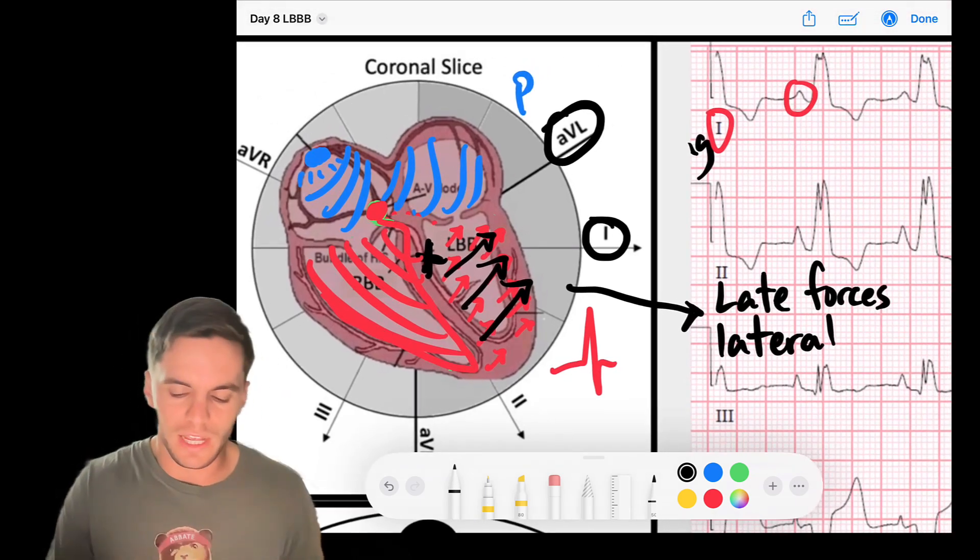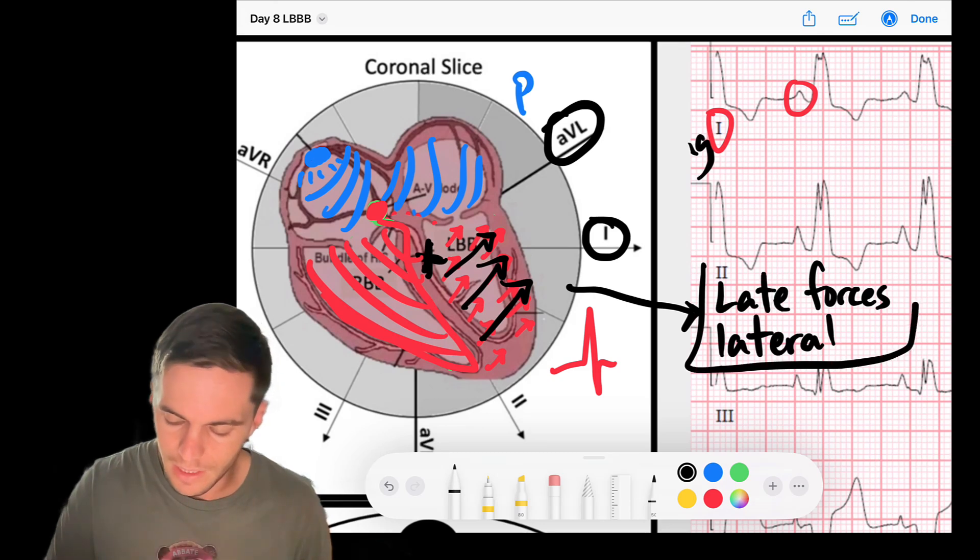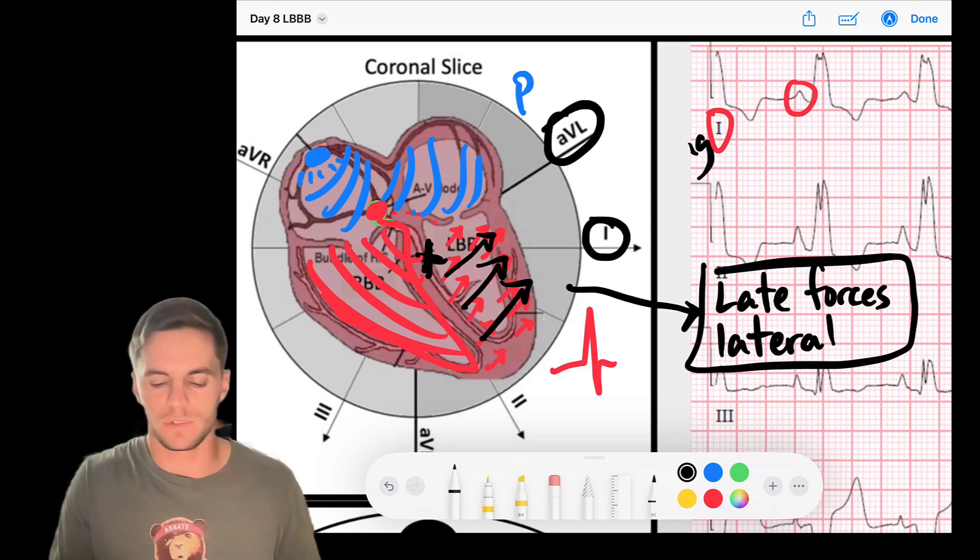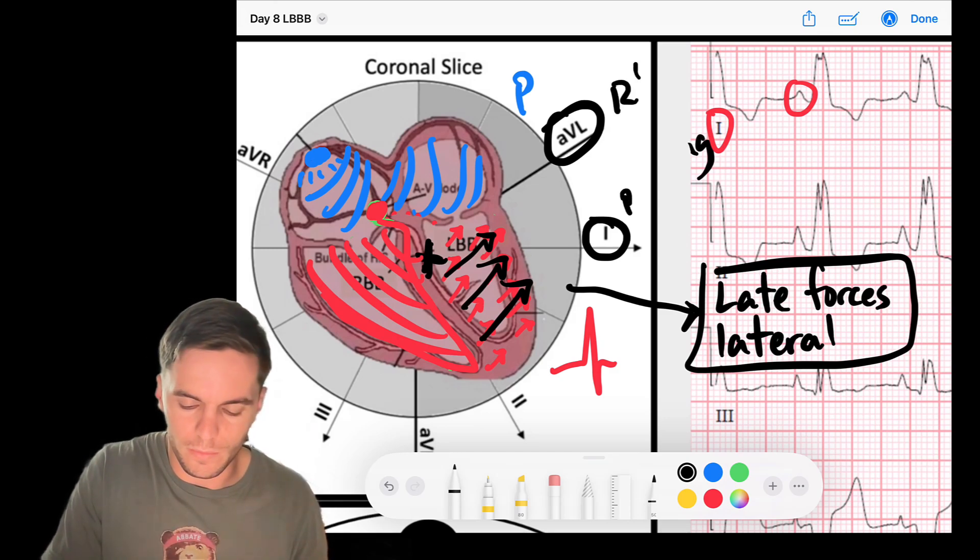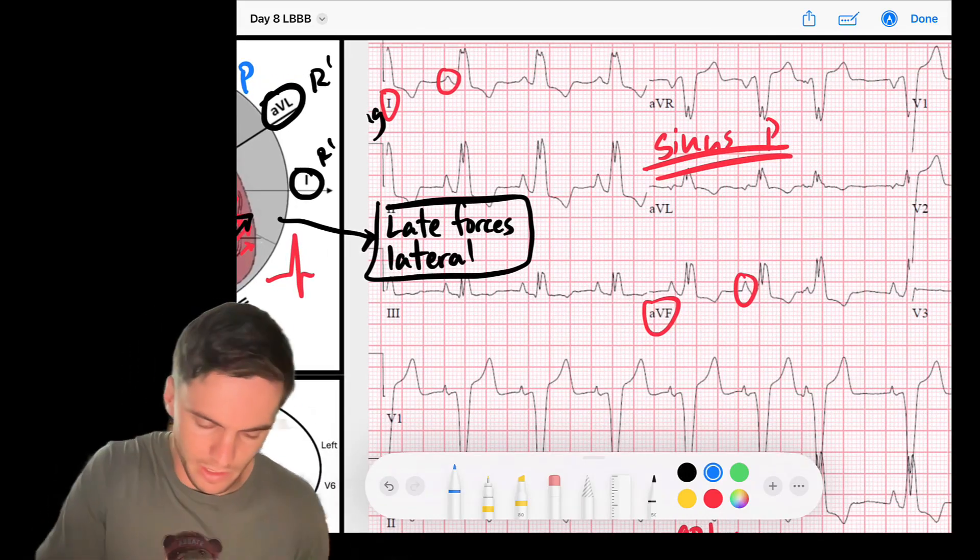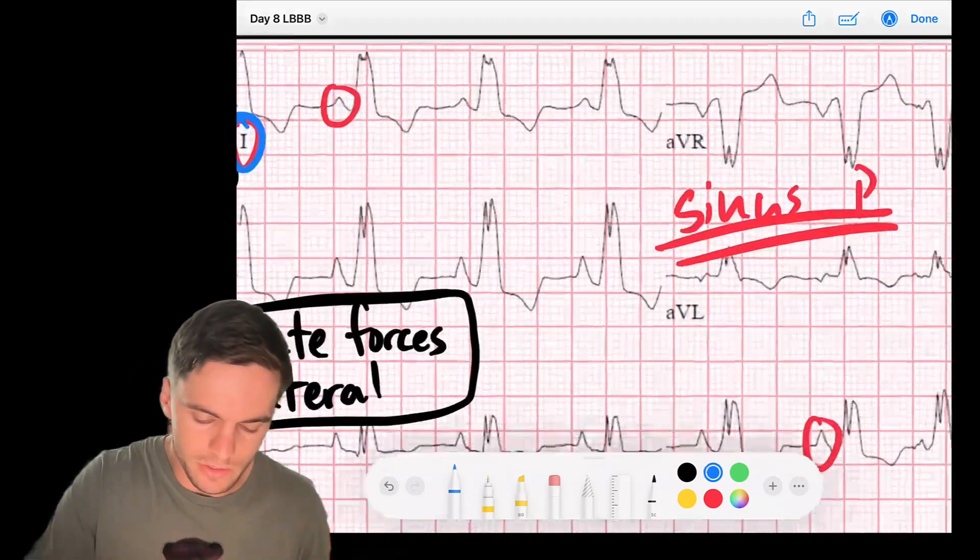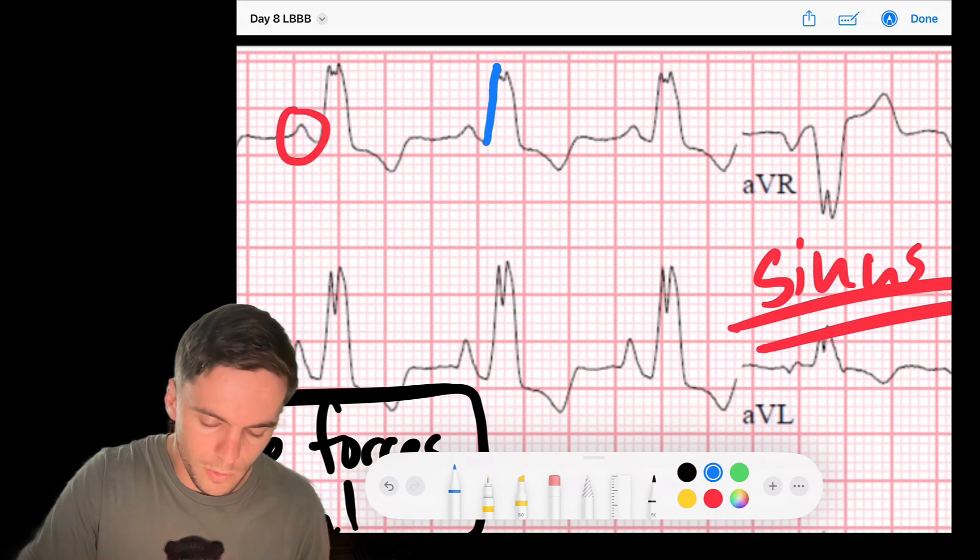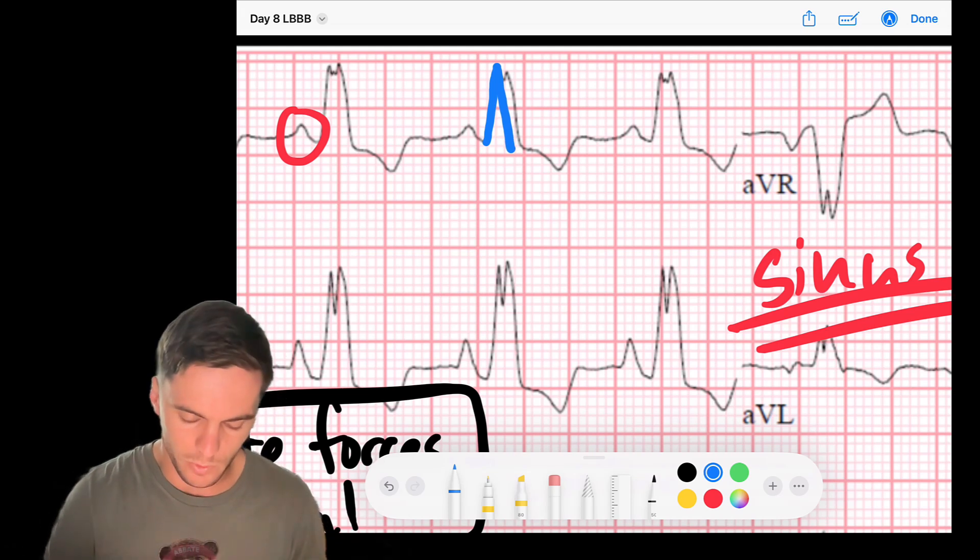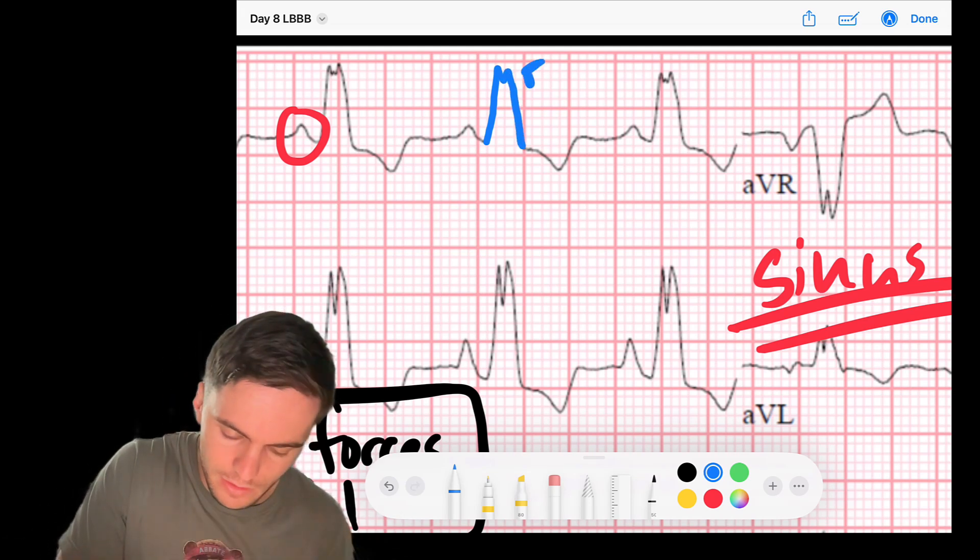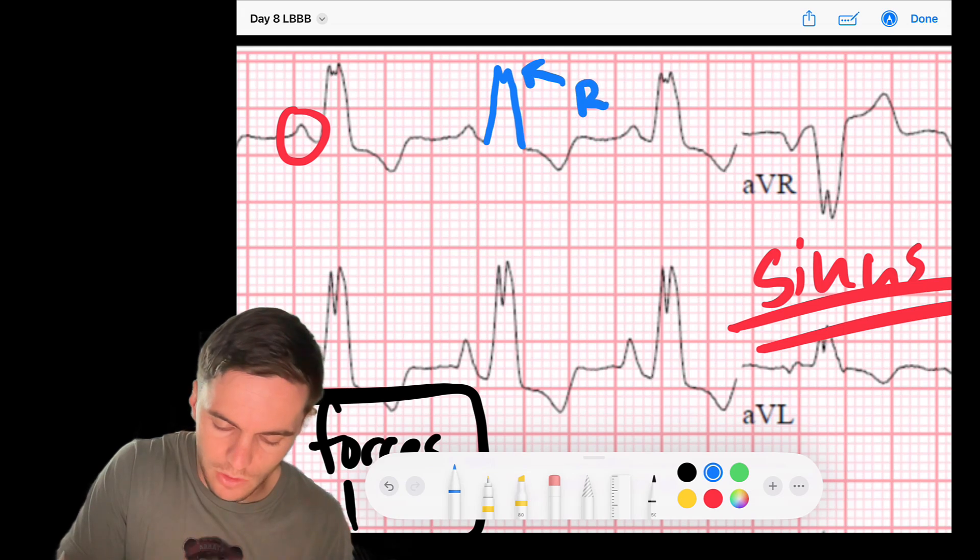What leads are going to capture those forces positively? Leads 1 and AVL. And so what we'll see in leads 1 and AVL are these late positive forces that will end up being what we call kind of an R prime. So we should see some type of R prime. And so if I take a look here at these leads, lead 1 right here in blue, if I look, notice that after the onset of my QRS, my QRS should normally return back to the baseline. But look what I have here. It actually goes up. And then as it tries to return back, it actually gets the second positive R wave. And that right there is an R prime.